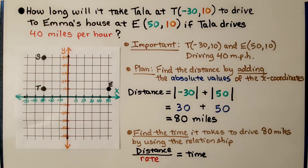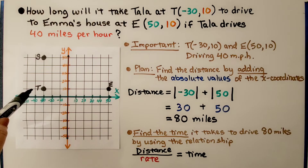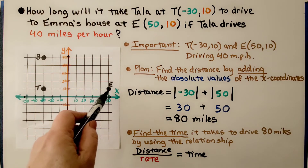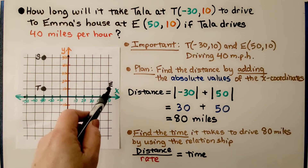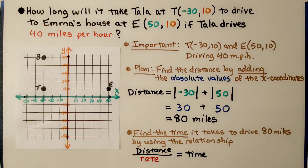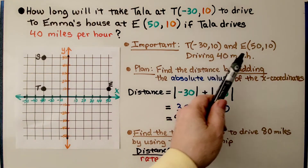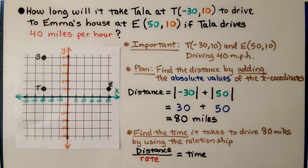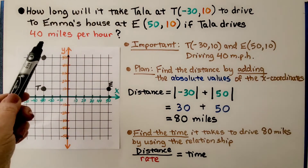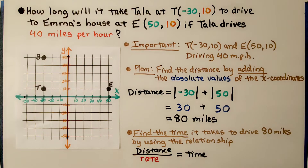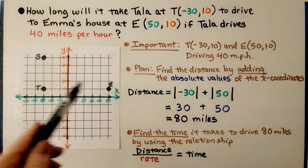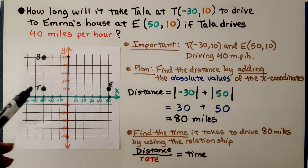How long will it take Tala at point T, which is at negative 30 for x and 10 for y, to drive to Emma's house at point E, which is at 50 for x and 10 for y, if Tala drives 40 miles per hour? We note the ordered pairs for points T and E, and that she's driving 40 miles per hour. Our plan is to find the distance by adding the absolute values of the x-coordinates, because they're on opposite sides of the y-axis.